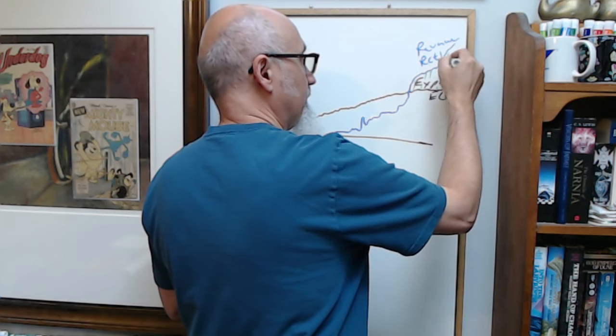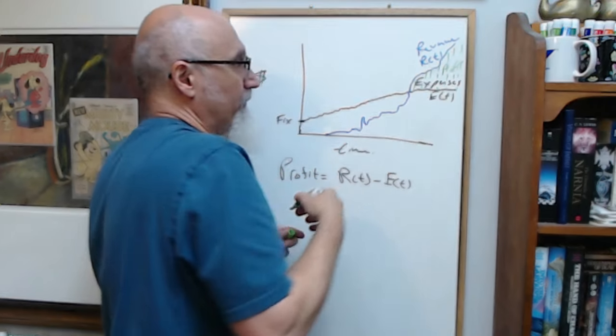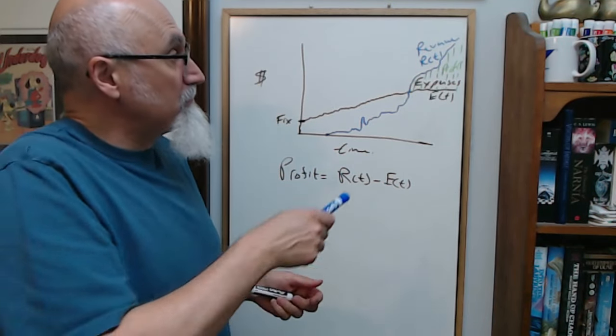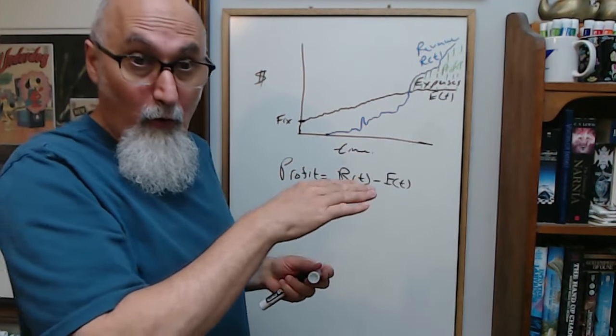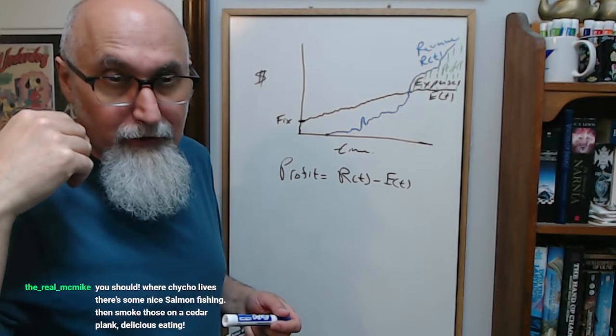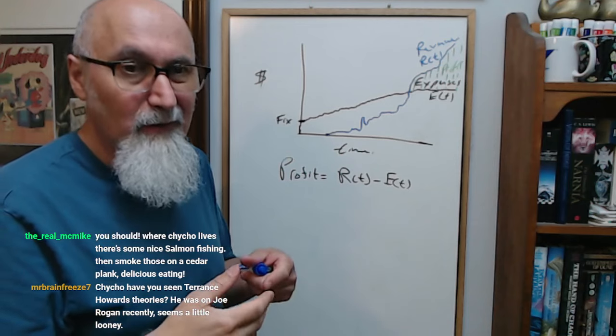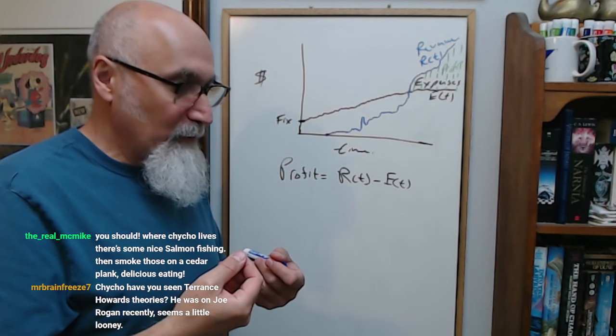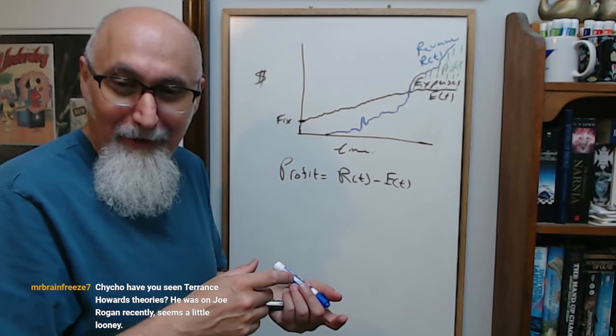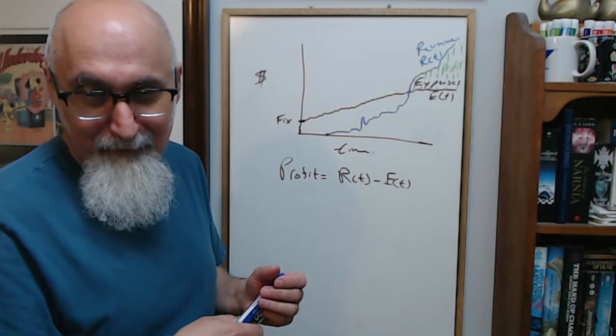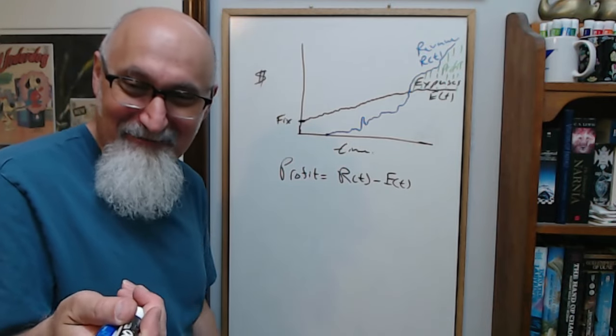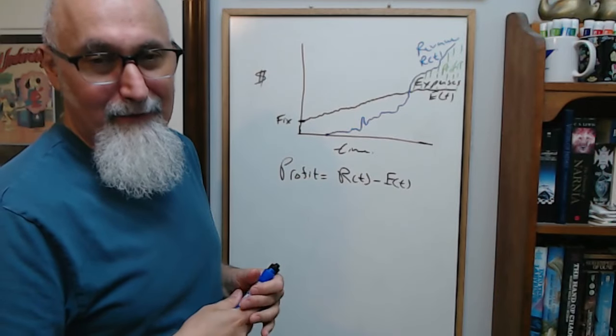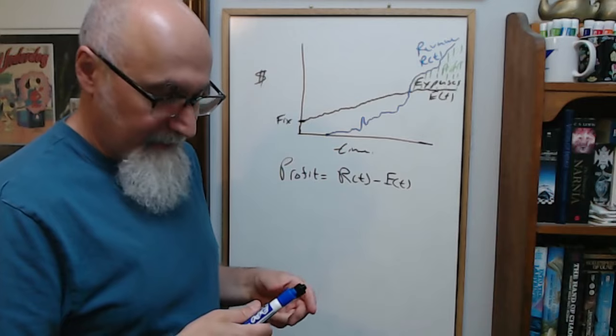This is really what you want - you want to see your profits increase, the gap here increase. There's two ways you could do this: you could generate more revenue or reduce your expenses. Generating more revenue is marketing, better product, buying out competitors, mergers and acquisitions. Mr. Ringfreeze, have you seen Terence Howard's theories? I knew this was going to come out. We'll talk about it.